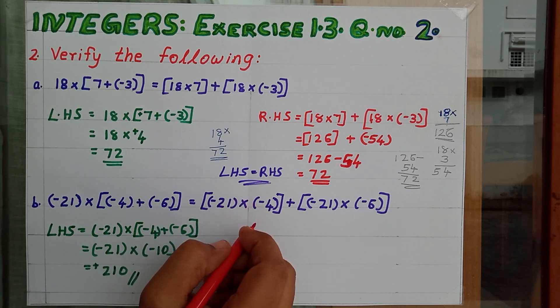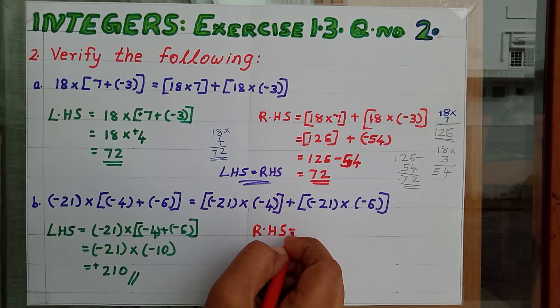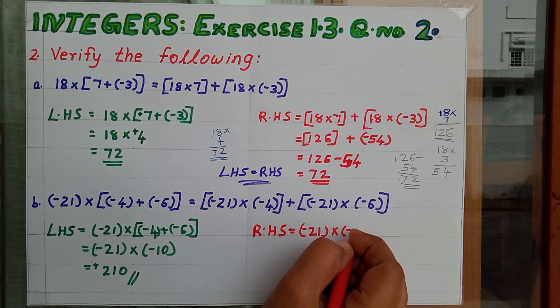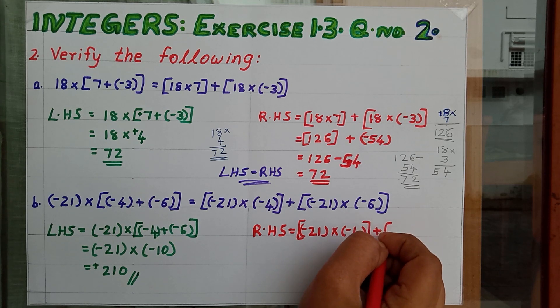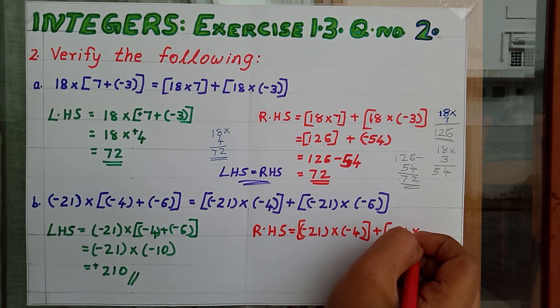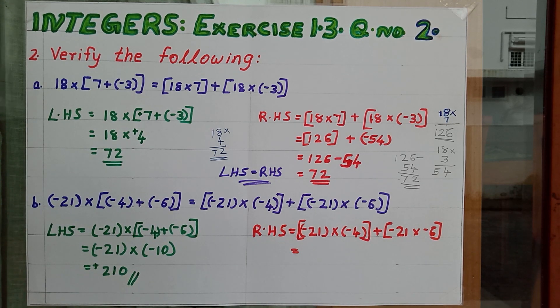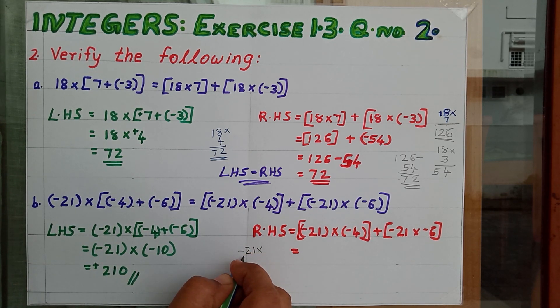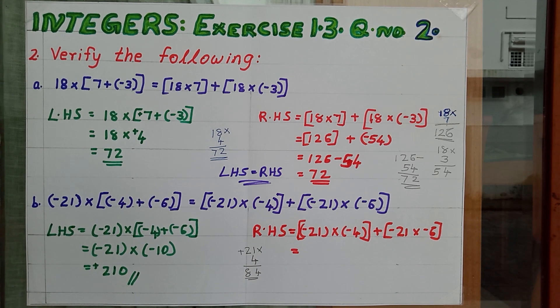Here RHS equal to minus 21 into minus 4 plus minus 21 into minus 6. Equal to minus 21 into minus 4. 21 into 4. 84. Minus into minus. Plus.